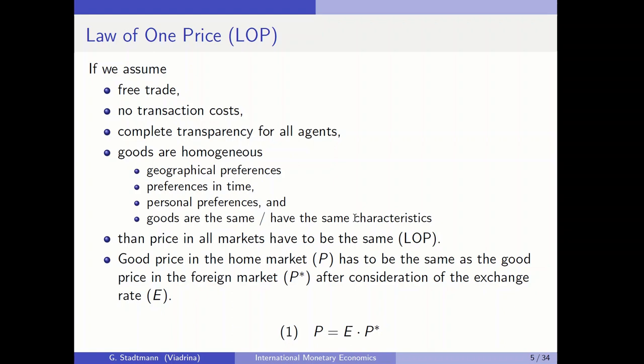In equation one we have formalized this relationship. The goods price in the home market is indicated by P, the goods price in the foreign market is abbreviated by P*, and the exchange rate is given by E. When all these assumptions are fulfilled, the goods price in the domestic economy must equal the goods price in the foreign economy after consideration of the exchange rate.